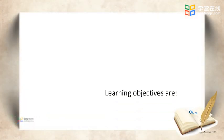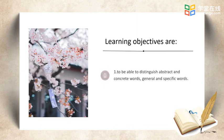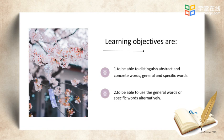Learning how to use general and specific words can make our writing more vivid and interesting, or at least less confusing. Learning objectives are: one, to be able to distinguish abstract and concrete words, general and specific words; two, to be able to use general words or specific words alternatively.